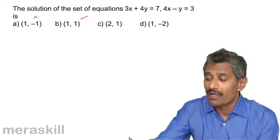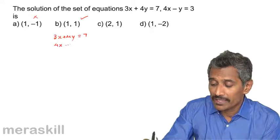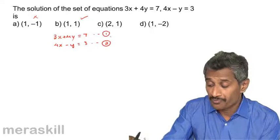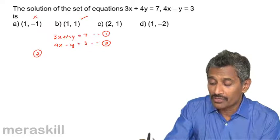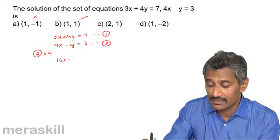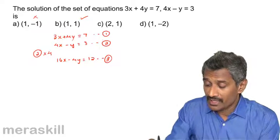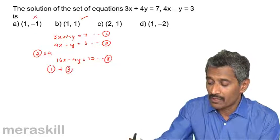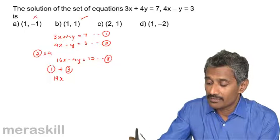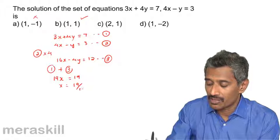But suppose we need to solve it. We have 3x plus 4y equals 7 — call this equation 1 — and 4x minus y equals 3 — equation 2. We want to equate the coefficient of y, so we multiply equation 2 by 4: 16x minus 4y equals 12, call that equation 3. Now add equations 1 and 3: 3x plus 16x is 19x, and 7 plus 12 is 19.